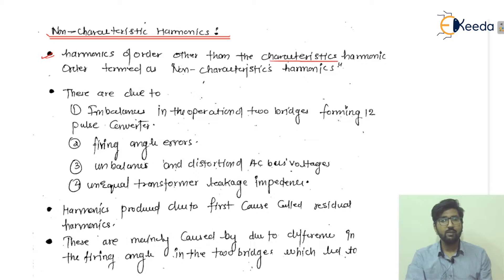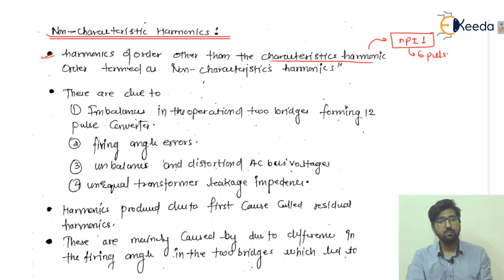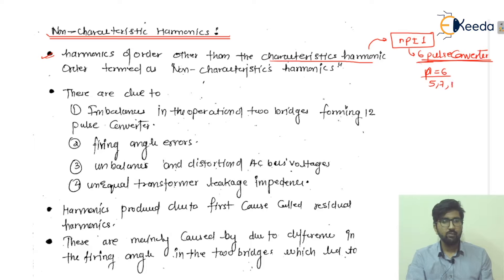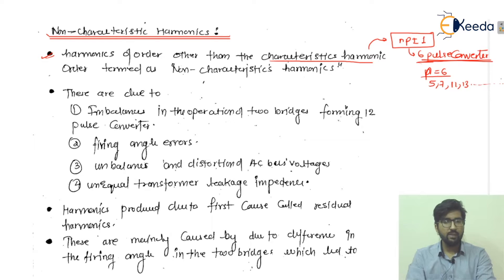For example, in a six-pulse converter where P = 6, if N = 1, we get the 5th and 7th harmonics. For N = 2, six times two is twelve, so twelve plus or minus one gives the 11th and 13th harmonics, and likewise we get different harmonics. Any harmonics not following that NP ± 1 relation are simply your non-characteristic harmonics — this is the definition to remember for your exams.